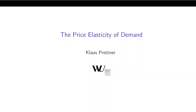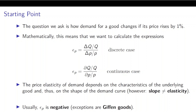The topic of this chapter is the price elasticity of demand. In the previous lecture we have seen what an elasticity actually is and that it measures the percentage change of a variable in response to the percentage change of another variable. Now if we focus explicitly on the price elasticity of demand, the question we ask is how demand for a good changes if its price rises by one percent.